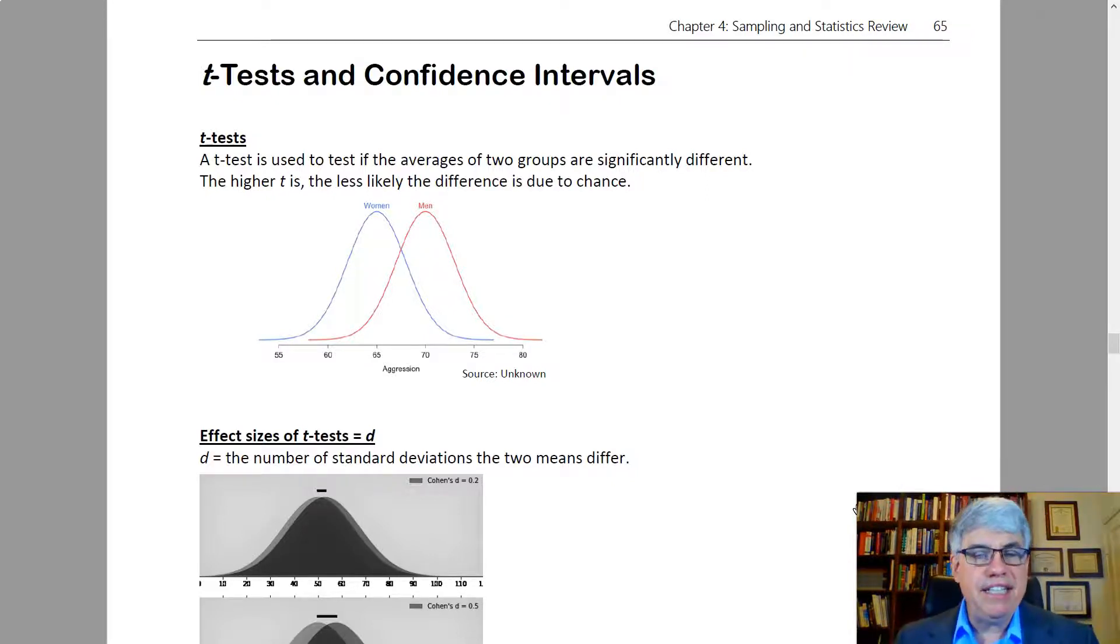A t-test is used to see if the averages of two groups are significantly different. If the t is real high, the less likely the difference is due to chance. So a high t means low p, and a low probability value means that it's not due to chance. There's a real difference between the two groups.